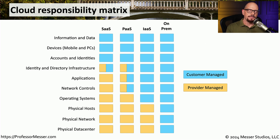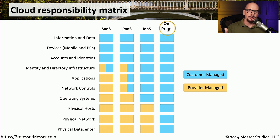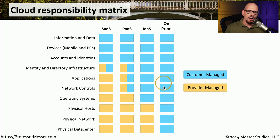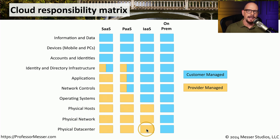Here's an example of a cloud responsibility matrix that you might find with any cloud service provider. In this chart, I've separated out software as a service, platform as a service, infrastructure as a service, and an on-premises device that you would manage yourself. Obviously with on-prem, everything from the data to the applications to the physical data center are all the responsibility of the customer. But with infrastructure as a service, you have the physical data center, the physical network, and the physical hosts all provided by the cloud provider, and then you handle all of the other pieces of that particular application.